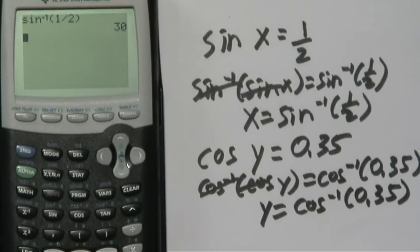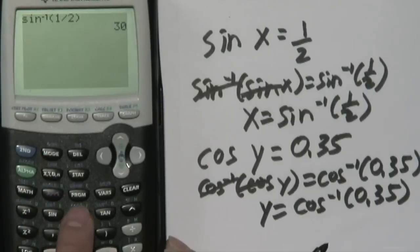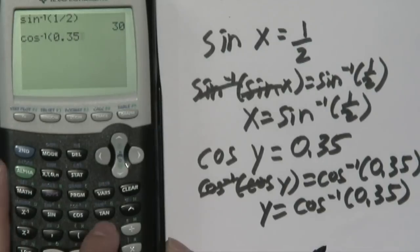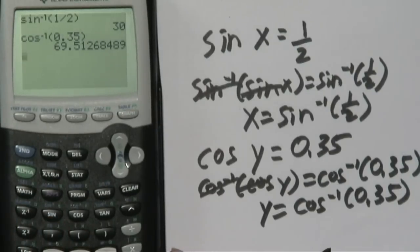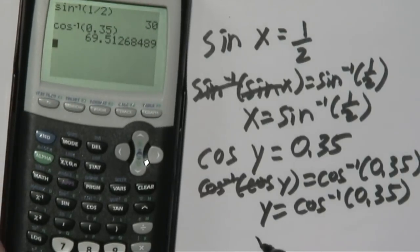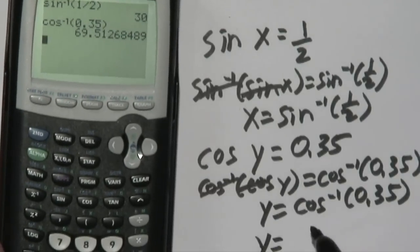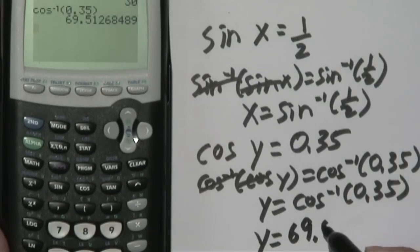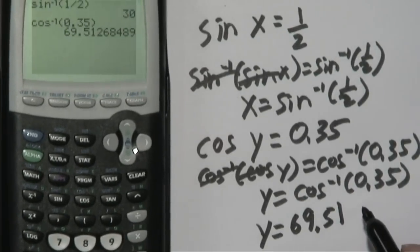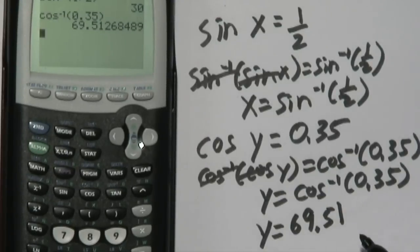And again you'll enter the calculator the same way. Second cosine inverse of 0.35 close parenthesis and you'll have a decimal answer. And you just want to simply round. So you have y is equal to, let's round to two decimal places, 69.51 degrees. And the same thing will work for tangents and all it takes is the tangent inverse function for it to work out. That's how you calculate angles using trigonometry.